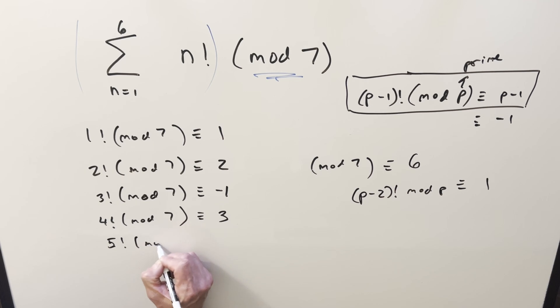5 factorial we already found that 1, that 1 is just going to be 1 which we have right there. And 6 factorial this thing right here that formula that's going to be 6 or I can write that as minus 1.